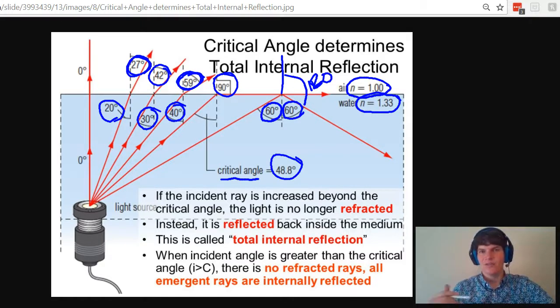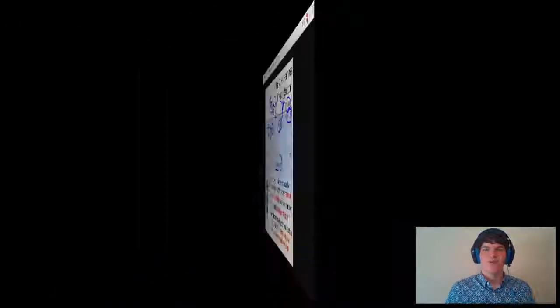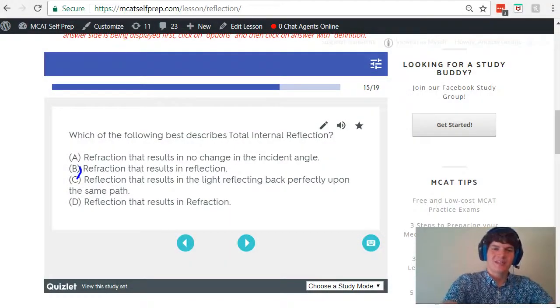But since it's not entering the new medium but simply coming back into the original medium, we no longer think about it as refraction but we think about it as reflection. So we can summarize total internal reflection as refraction that results in reflection, which matches up perfectly with answer choice B.